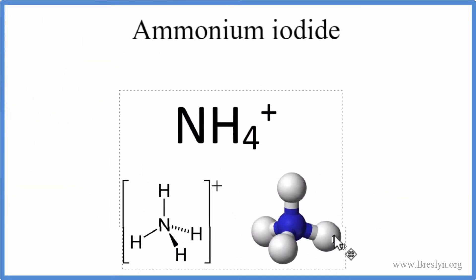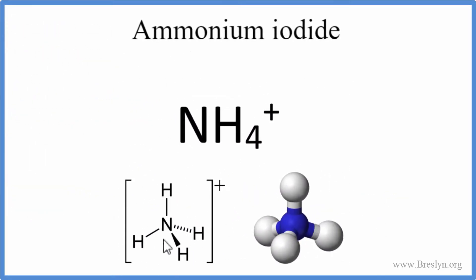We can see that the ammonium ion has a nitrogen with four hydrogens around it, and the charge, the overall charge, is a 1+. So let's write NH4+ underneath the ammonium.